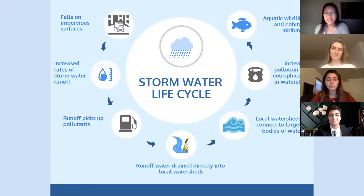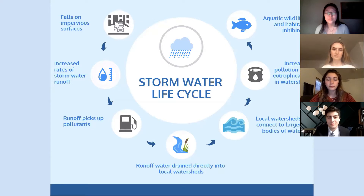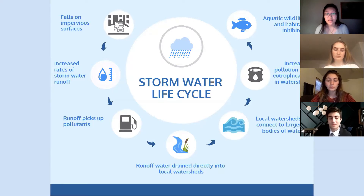Because there aren't any intermediate treatment water facilities, the water acts as a mechanism to transport these pollutants directly into local watersheds. Through our current drainage system, stormwater is drained directly into local watersheds like the Ravonna River and connects to larger bodies of water. This increase in runoff carrying pollutants increases watershed pollution, causing excess nutrients from fertilizers entering waterways, erosion, eutrophication, algal blooms, and sediment loading, which negatively impact aquatic habitat and wildlife.